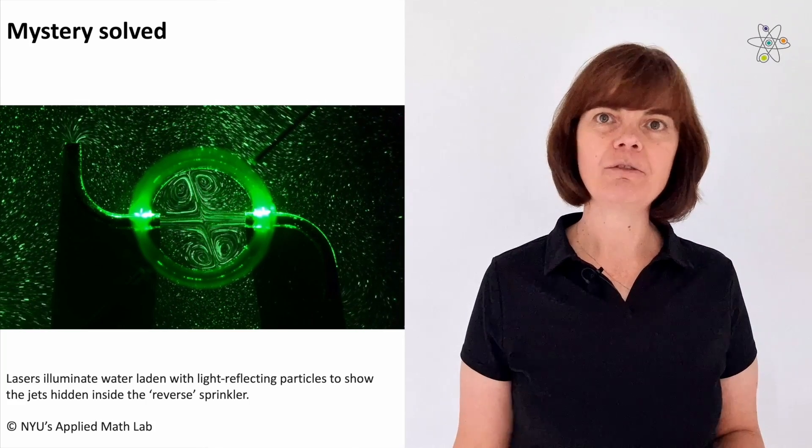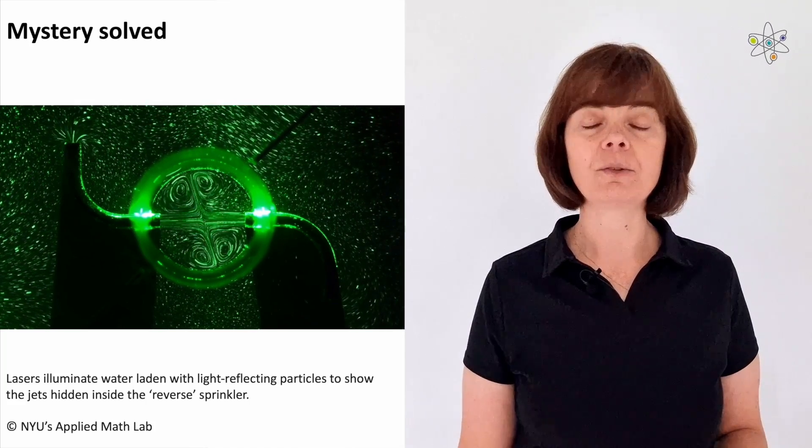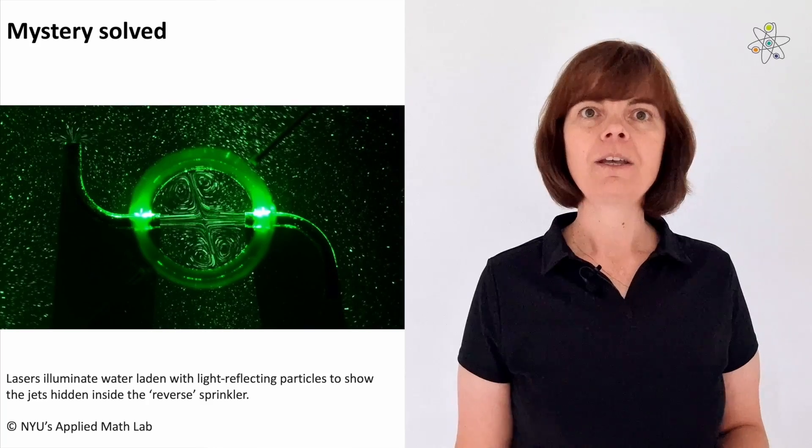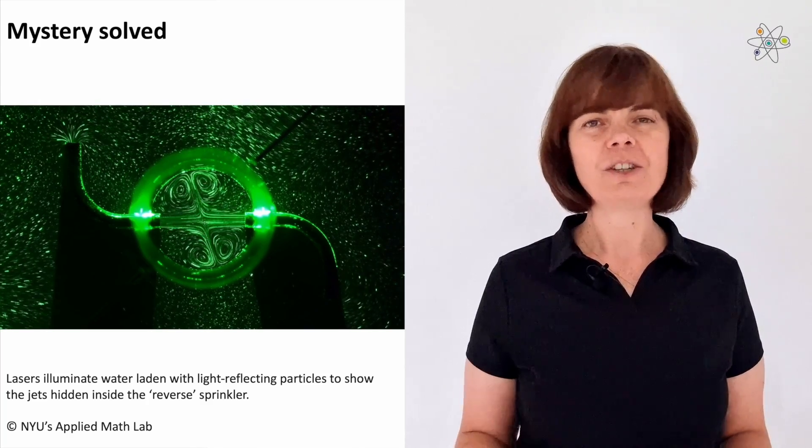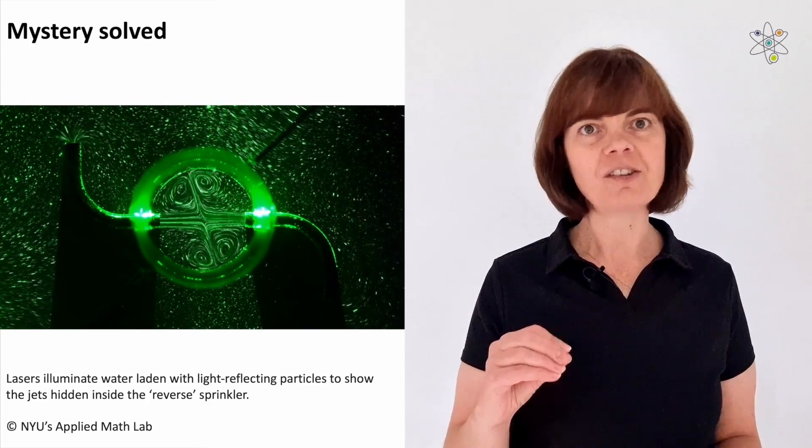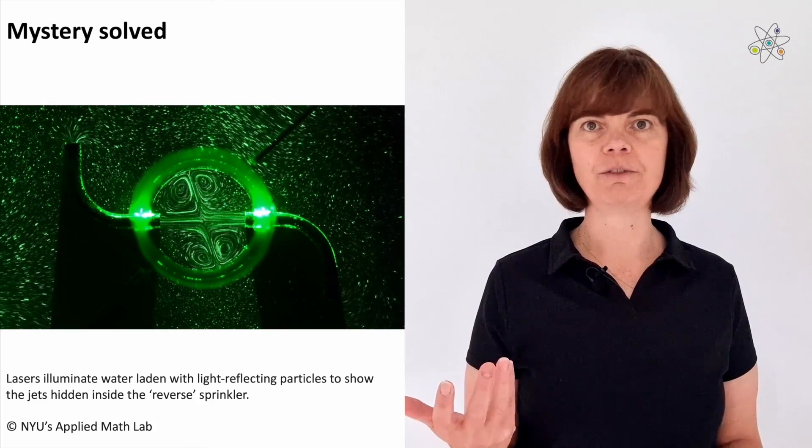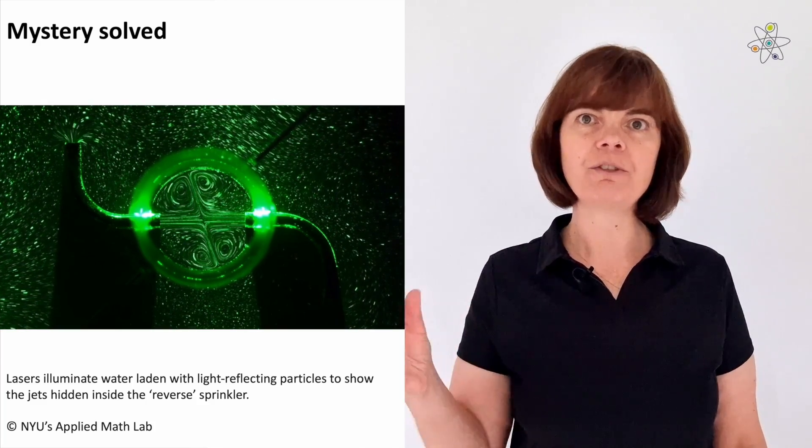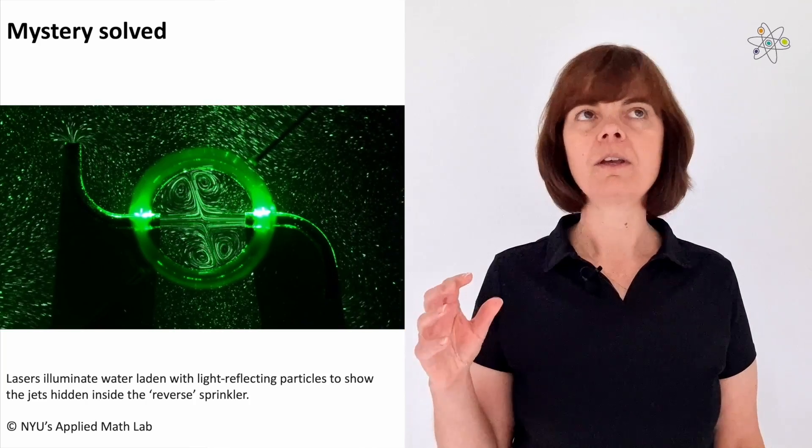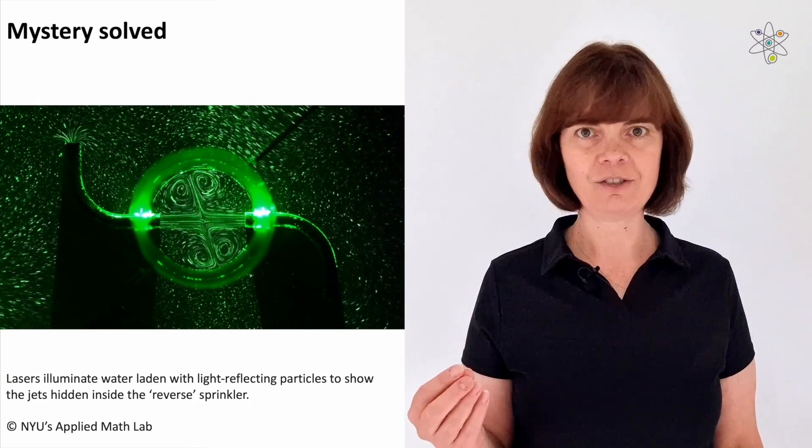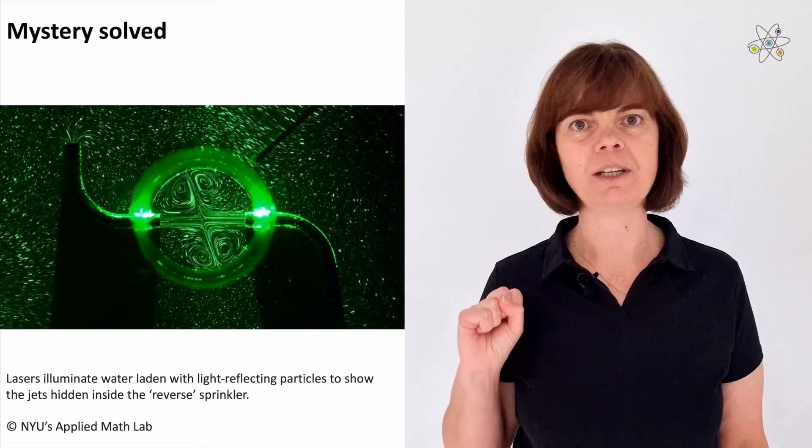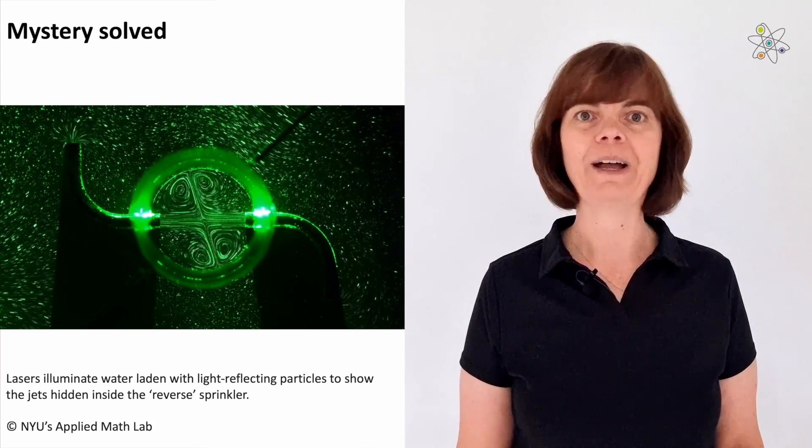It might seem that reversing a submerged sprinkler is not of great practical interest, but there are applications in which it's really important to be able to precisely control flows ejected from devices, and to understand how the process modifies the forces they experience. For example, there's lots of application in technologies that harvest energy from the movement of water or air.